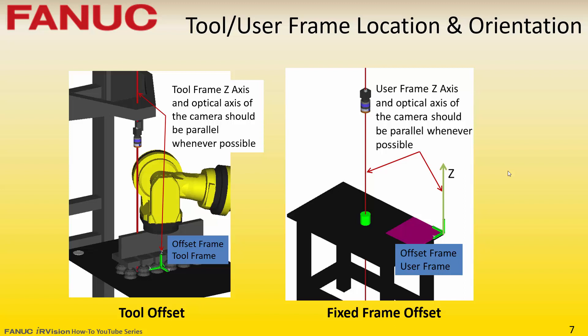The tool frame or user frame origin location can be anywhere, but the distance from the origin of the offset frame to the part feature being located by the vision process needs to be known in the Z dimension only and entered as the part Z height.